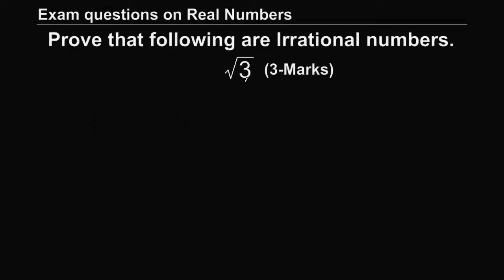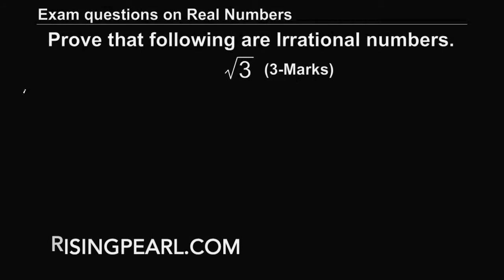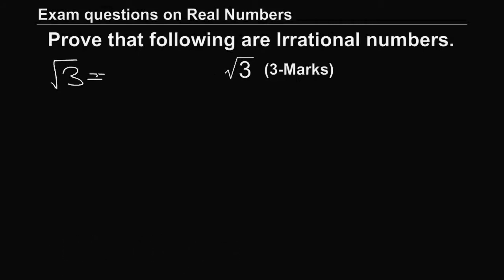The first problem is to prove that square root 3 is an irrational number. We will solve this by a technique known as proof by contradiction — contradiction means opposite. So we assume the opposite: let us assume that square root 3 is a rational number. In that case, we can represent it in the form P by Q, where P and Q are co-prime and Q is not equal to 0.